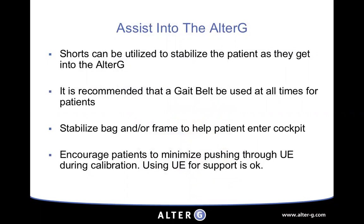To get someone into the Alter-G, have them put on the shorts first. I always recommend a gait belt because you don't want to tug on the shorts too much, and after they're zipped into the bag you won't have anything to hold on to. You can stabilize the bag or frame to help the patient enter. Once inside the cockpit, remind them to stand straight — not to sit down in the shorts — because when they sit, their center of gravity moves outside their base of support and the treadmill belt can move. Keep the patient standing with their center of gravity over their base of support.